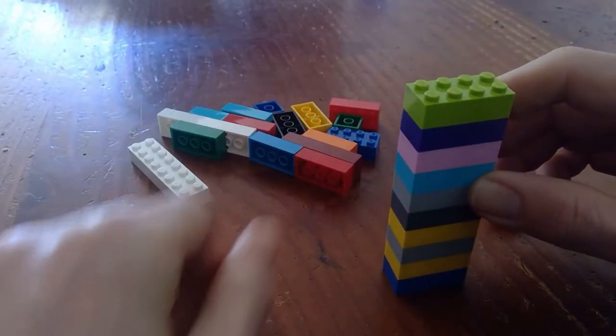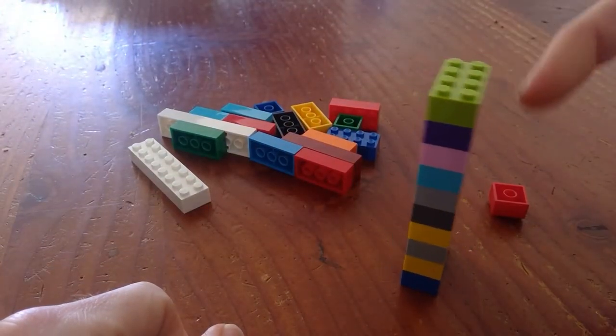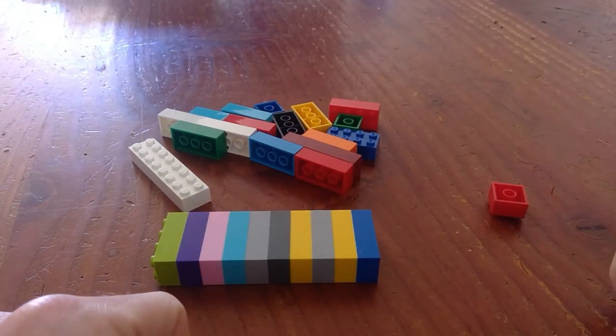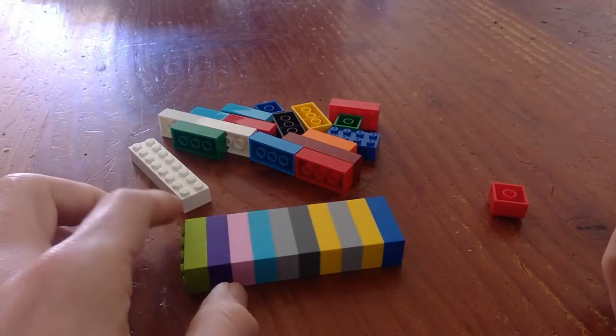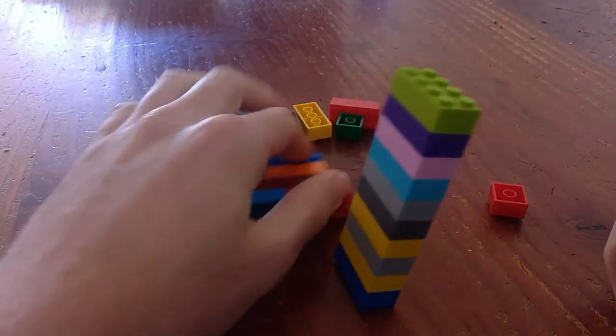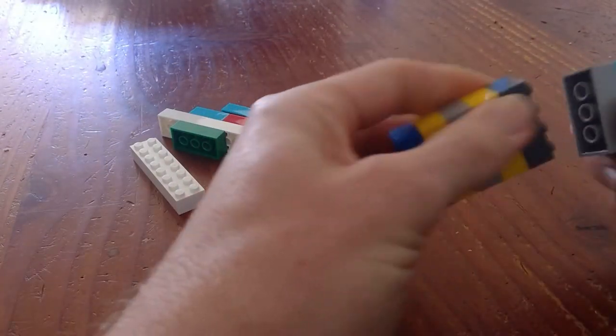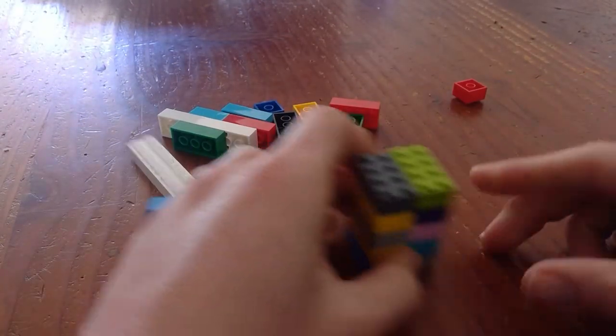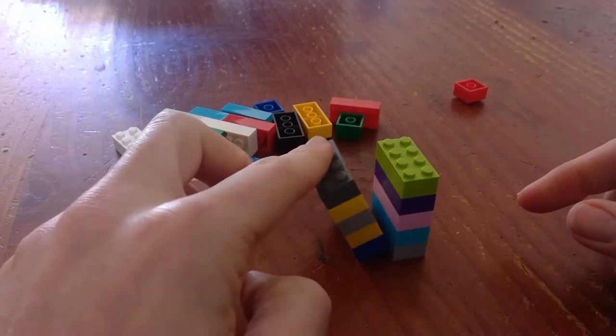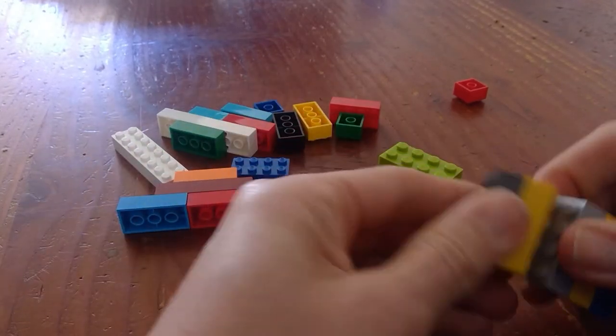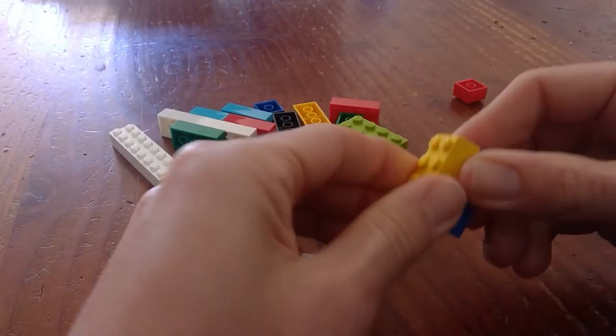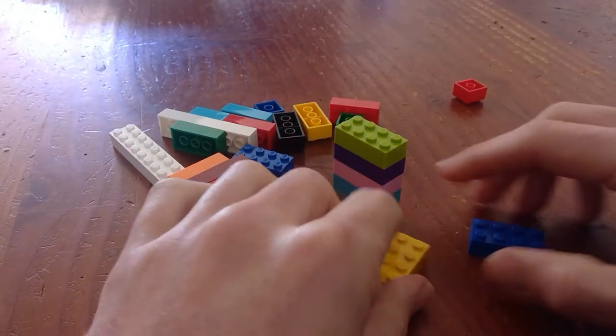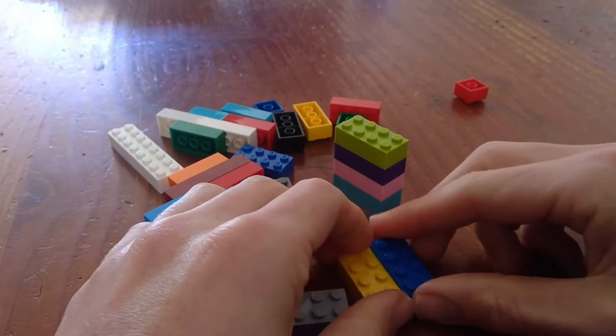So any little thing that comes along and bumps it, it's going to fall down. So okay, let's make it wider. And you can see we've got a base here, but they're not stuck together. To make a strong base, we need to change the directions that the bricks go when we clip them together.